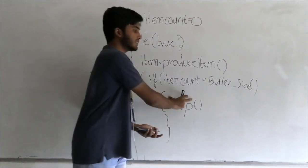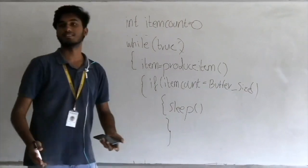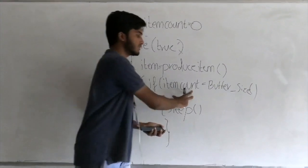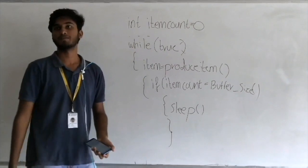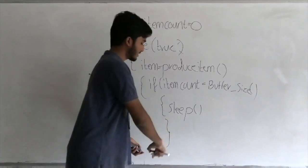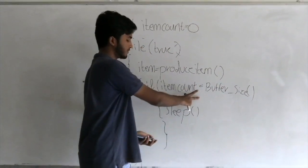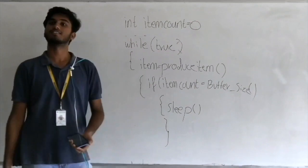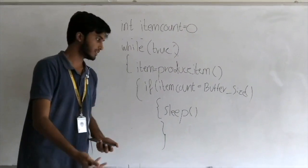If item count equals buffer size, it means the buffer is full. When the buffer is full, we have a sleep block, so the producer is supposed to sleep and not produce more items to go into the buffer.